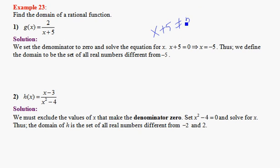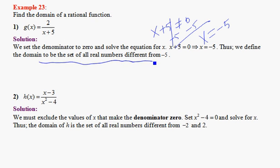We set x + 5 = 0 and solve for x, getting x = -5. Then we say that the domain is the set of all real numbers different from -5.